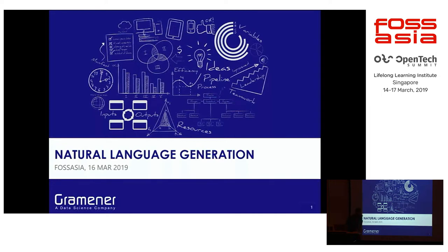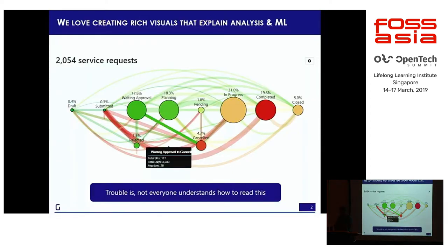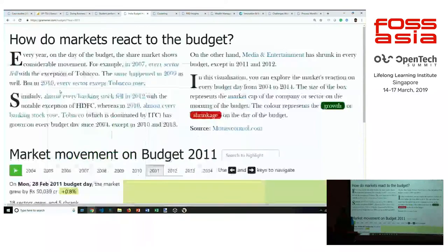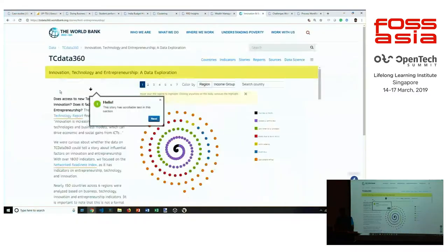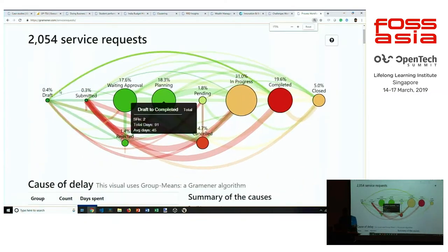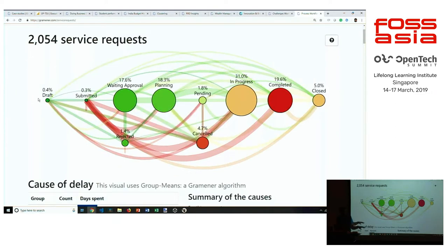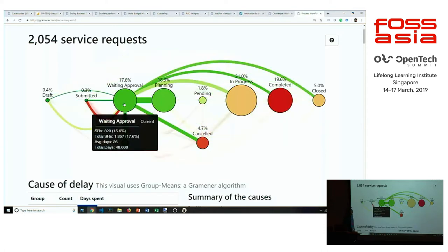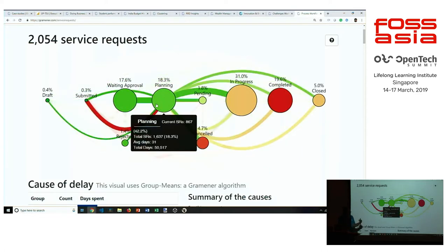We're going to be talking about natural language generation, but first we're going to be talking about why we need it in the first place. We love creating some fairly complex visuals at Gramener, and one of the things that we did for a client who asked us 'tell me why my workflow is delayed' was put together this visual which showed the process going from a draft stage to a submitted stage, then to waiting for approval, then to plan, and so on.